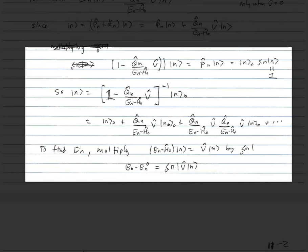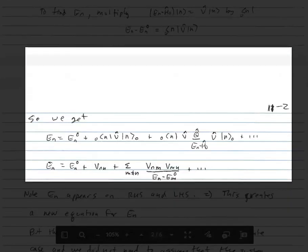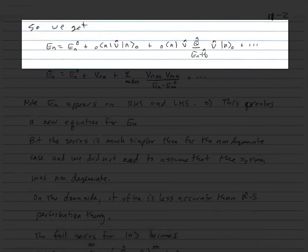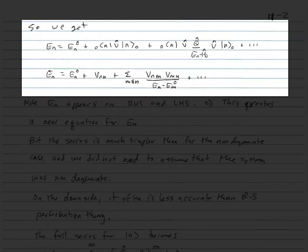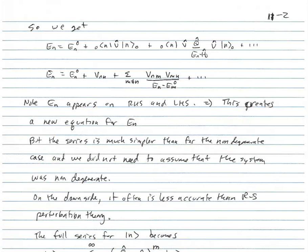To find En, we multiply (En − H0)|N⟩ = V|N⟩ by ⟨N₀|. We get En − En0 = ⟨N₀|V|N⟩, using the normalization ⟨N₀|N⟩ = 1. Substituting in the geometric series for |N⟩, we get En = En0 + VNN + Σ_{M≠N} VNM·VMN/(En − EM0) and so forth. The key thing is that En appears on both sides — this is an iterative equation that we now have to solve for En.